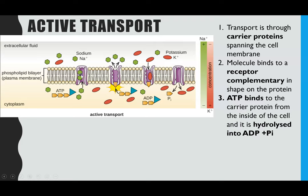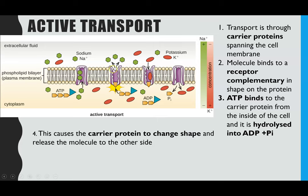Within a membrane there'll be lots of different carrier proteins for different molecules to attach to. In step three, the ATP within your cell attaches to the carrier protein and is immediately hydrolyzed into ADP, adenosine diphosphate, and the third phosphate remains attached to that carrier protein. Because that phosphate group is attached, it causes the carrier protein to slightly change shape — altering its unique 3D tertiary structure. As that carrier protein changes shape, it causes the release of the sodium ions to the other side of the cell.